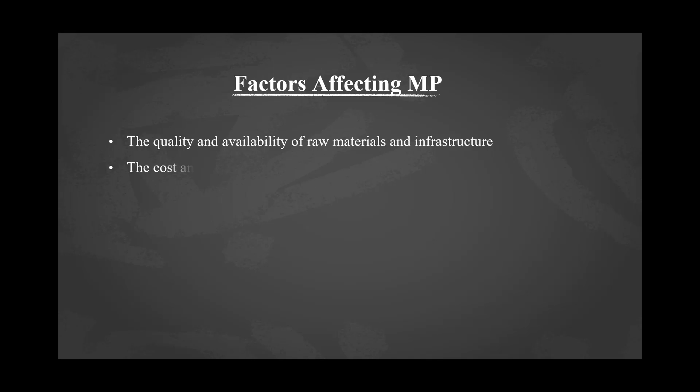Next we have the cost and suitable labor. Labor is an indispensable element of the manufacturing process. Even in highly automated industries, the availability and shortage of suitable labor definitely affect manufacturing. For smooth operation and great results, manufacturers require suitable labor. Labor costs are likely the largest line item on a company's balance sheet, so cost and availability of suitable labor have great impact — both positive and negative — on the manufacturing process.